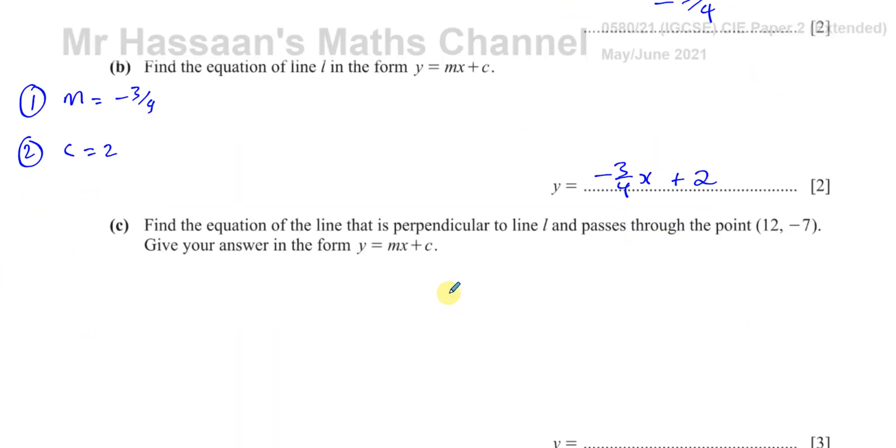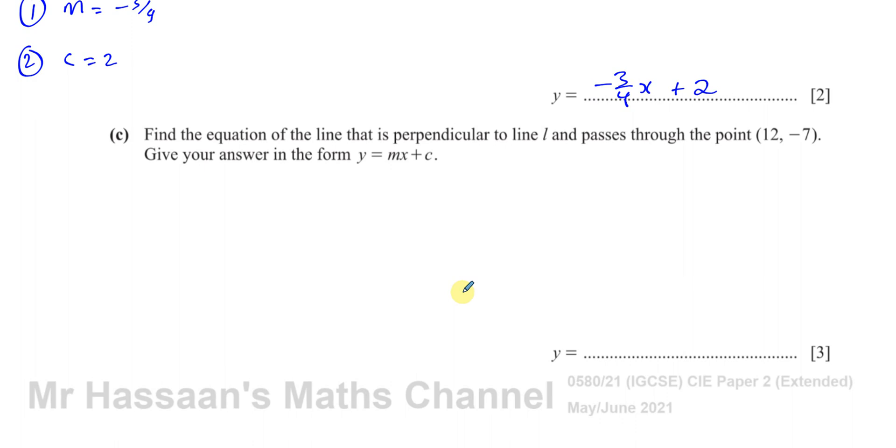Now, for part C, which was a question that was asked by the student, find the equation of the line that is perpendicular to the line L. Perpendicular means at right angles to line L and passing through the point (12, -7). So to find the equation of the line, we need two things. We need the gradient and we need any point on the line. In this case, we don't have the Y intercept, but we have the point (12, -7).